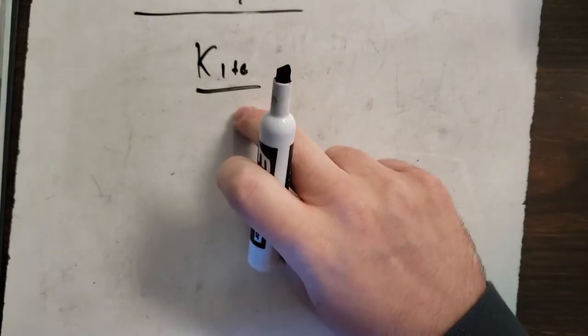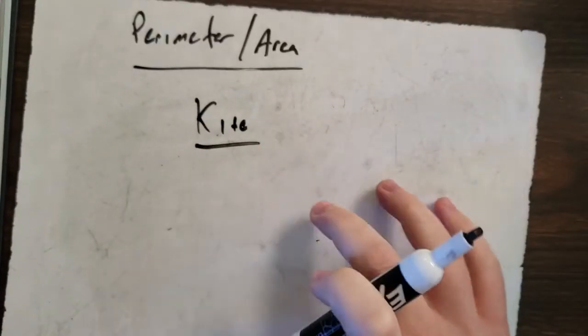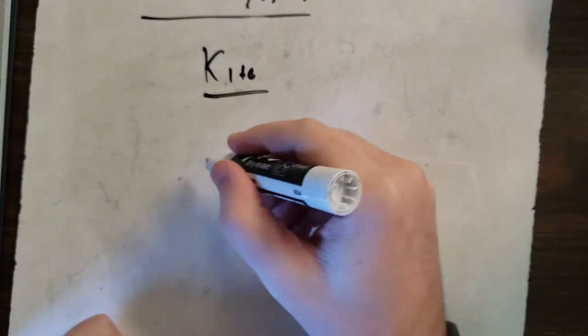Our next shape is a kite. Perimeter area of a kite. Now we all know what a kite looks like. That's what you think it looks like.